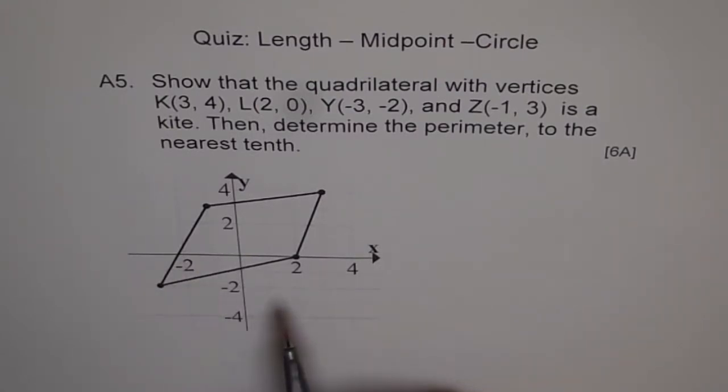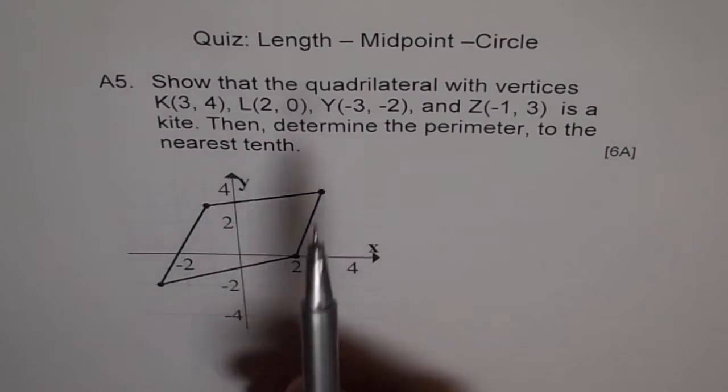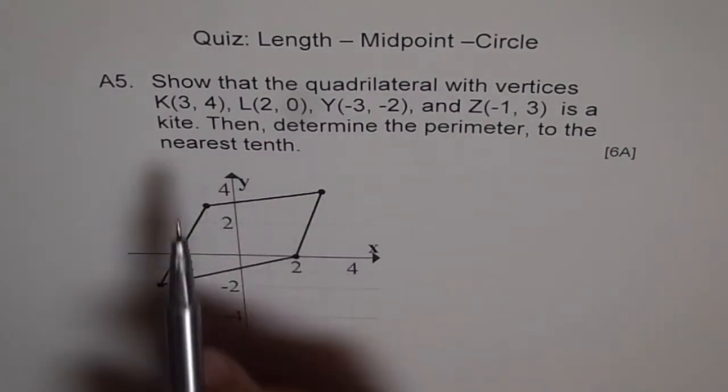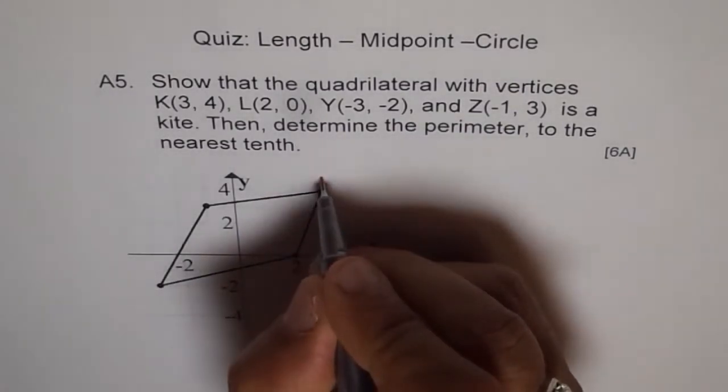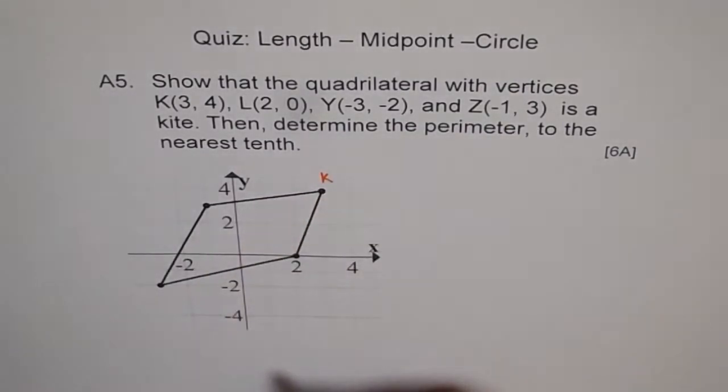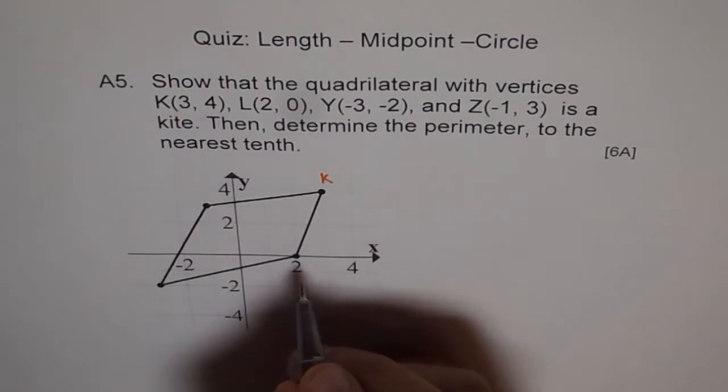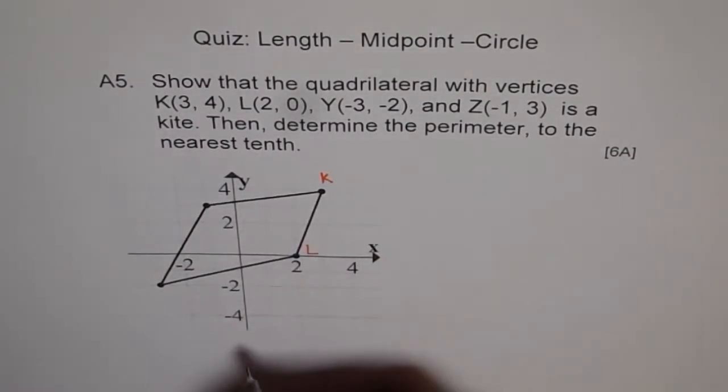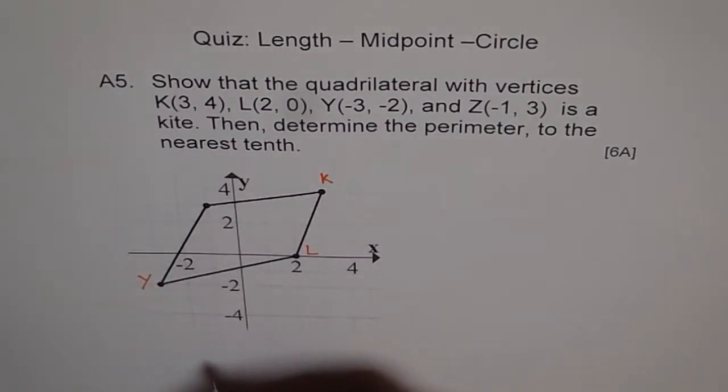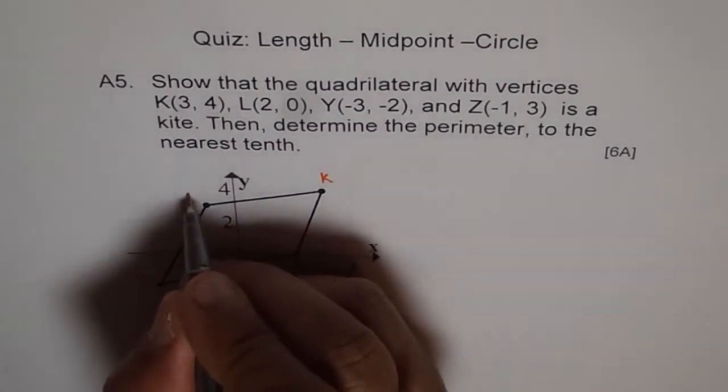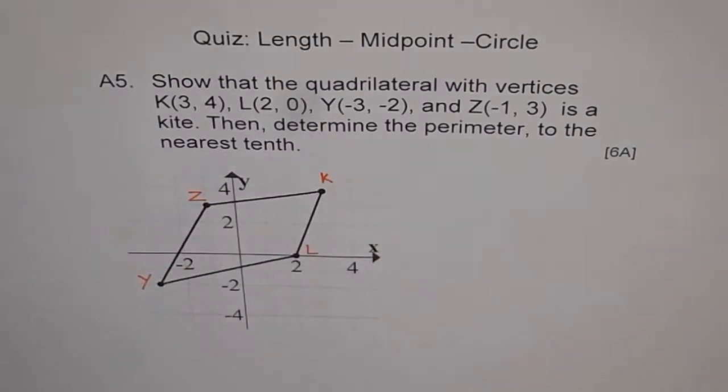Since the diagram is here, let's write down where the points K, L, Y, Z are. K is at (3,4), L is at (2,0), Y is at (-3,-2), and Z is at (-1,3). That is our quadrilateral.